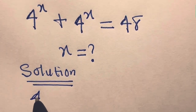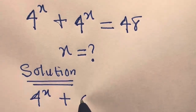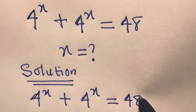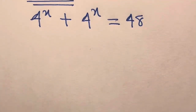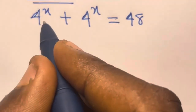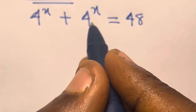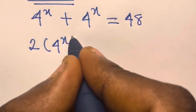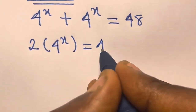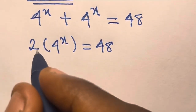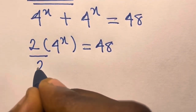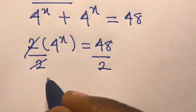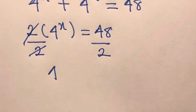We have 4^x plus 4^x equals 48. Adding these together gives us two times 4^x equals 48. We can divide both sides by 2 — this cancels — so we have 4^x.